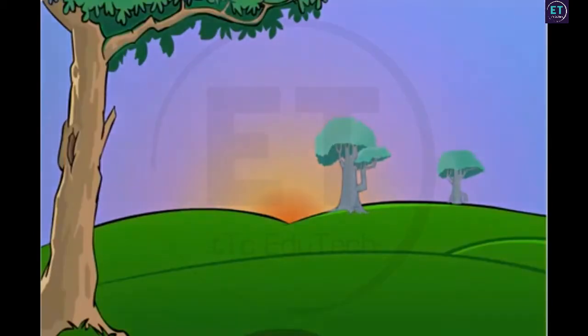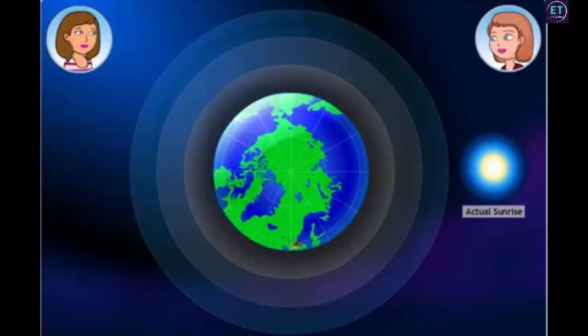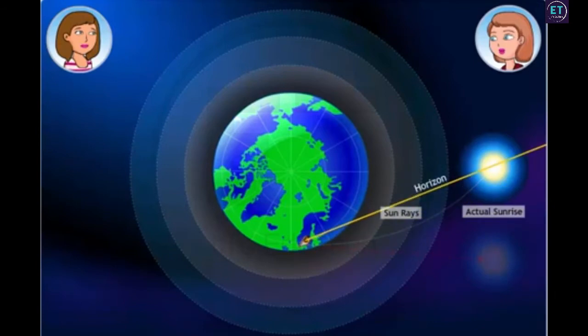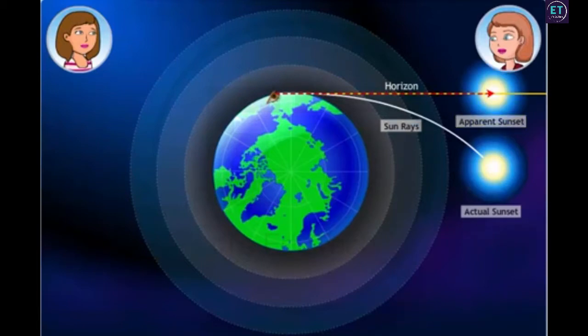Similarly, sunset occurs shortly after the sun crosses the horizon. When the sun is just below the horizon, its rays enter Earth's atmosphere and are refracted towards the Earth. The refracted rays reach us, making it appear as if the sun has already risen above the horizon. This is the apparent sunrise. The actual sunrise occurs when the sun actually crosses the horizon. Conversely, the apparent sunset occurs slightly later than the actual sunset. Since the light from the sun is already below the horizon, it refracts through the atmosphere, enabling us to see the apparent sunset even after the sun has already set.